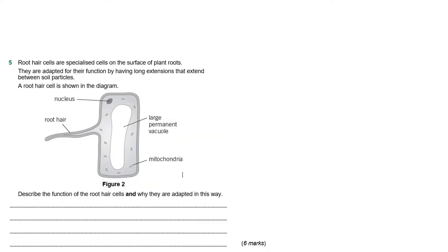Okay, so here is our six mark question. So this time we've got root hair cells are specialized cells on the surface of plant roots. They're adapted for their function by having long extensions that extend between the soil particles, and that's the bit there shown as the root hair. Okay, a root hair cell is shown in the diagram. Okay, and it says describe the function of root hair cells and why they are adapted in this way.